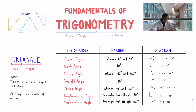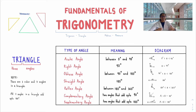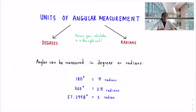The straight angle is just a straight line — it is 180 degrees. A reflex angle is between 180 and 360 degrees. Remember, a full circle is 360 degrees — if you go all the way around, that's 360 degrees. Complementary angles are two angles that add up to 90 degrees, and supplementary angles are two angles that add up to 180 degrees.